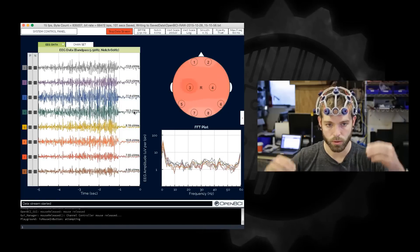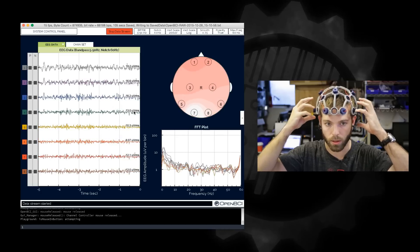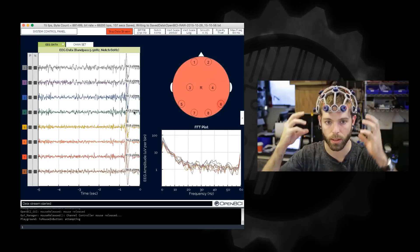And so you'll see that those signals are actually strongest in channels three and four, these locations, because those channels are closest to the muscles that are producing that EMG artifact.